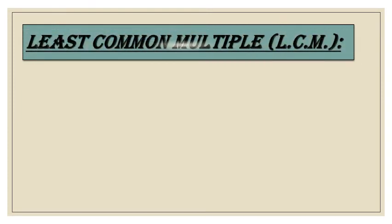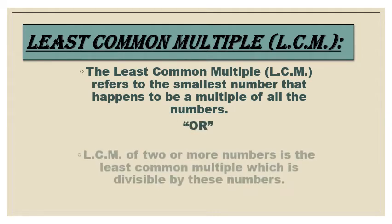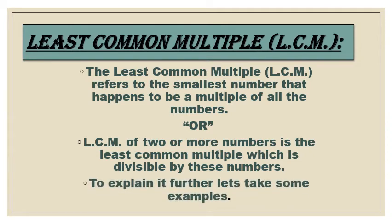My dear students, what is the Least Common Multiple? The Least Common Multiple, or LCM, refers to the smallest number that is a multiple of all the given numbers. In other words, the LCM of two or more numbers is the least common multiple which is divisible by all those numbers. Let's take some examples to explain further.